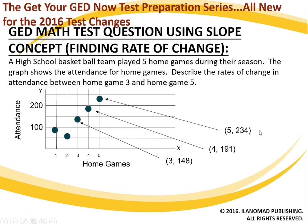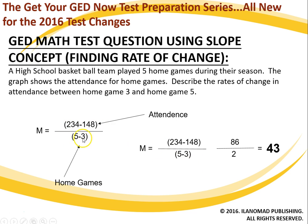So let's jump right into a word problem because this is where the rubber meets the road. A high school basketball team played five home games during their season. This graph shows the attendance for home games. Describe the rate of change in attendance between home game number three and home game five. Here you have your attendance numbers and here you have which home game it was. On the next slide, you'll see how we use y2 and y1 — this is y2, this is y1, just of my choosing, this is x2, this is x1. So we come over here: y2 minus y1 over x2 minus x1. We have our attendance and our home games, and we do our math and get our answer: 43. So the rate of change between home game three and five is 43.